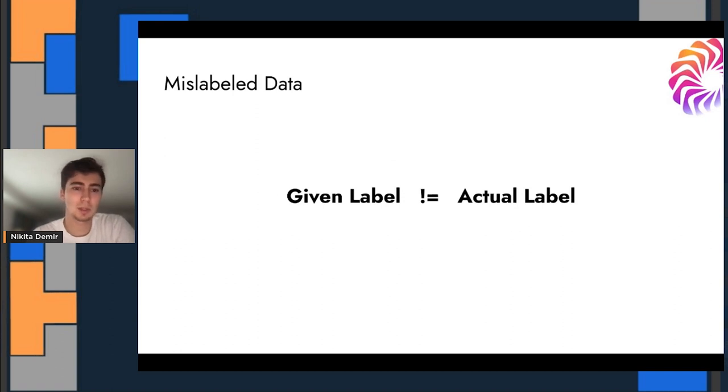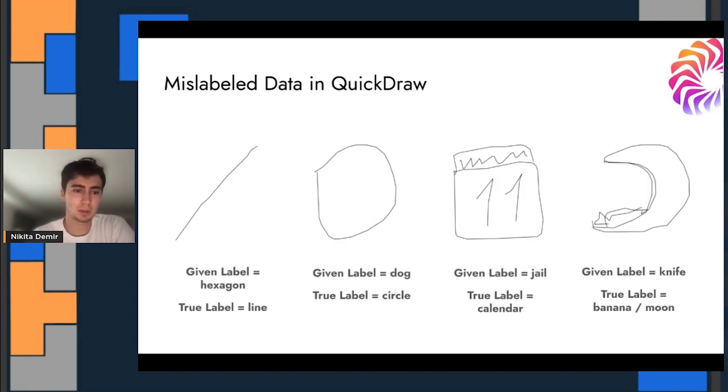So what is mislabeled data? Essentially, this is when the given label doesn't equal the actual label. For example, in an image classification task where a labeler was given a picture and they have to assign one of, let's say, like 20 categories to it. Here, for example, is the Quickdraw dataset. On the left, the labeler was shown what looks to be a line, but they labeled it as a hexagon.